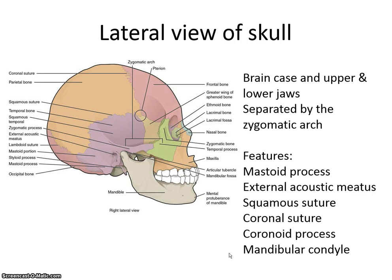From the side we see the brain case and the upper and lower jaws separated by an arch. The zygomatic arch is made up of the zygomatic bone and the temporal bone. The temporal bone creates that arch, which is really your lateral cheek — what you think of as your cheek. You can feel that easily, and that's what's fun about bones.